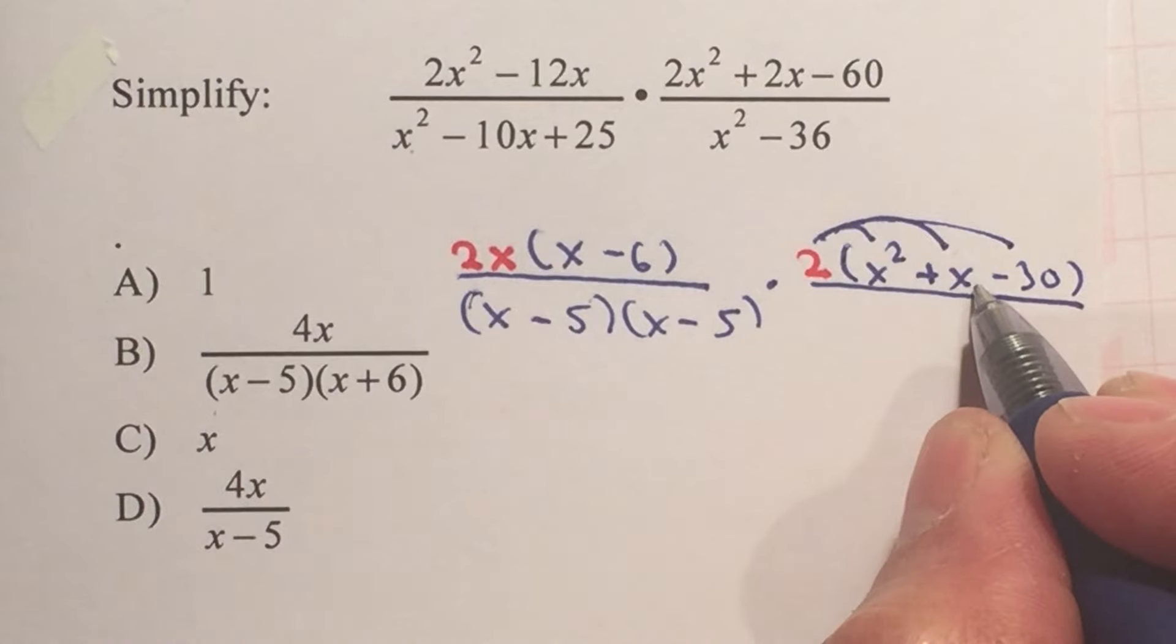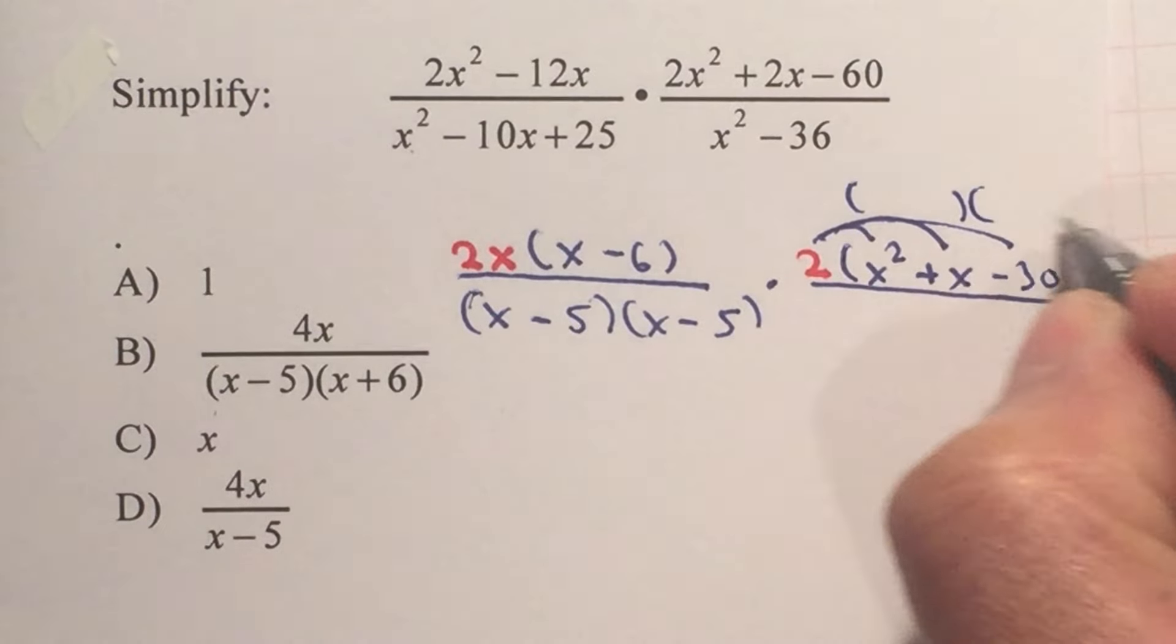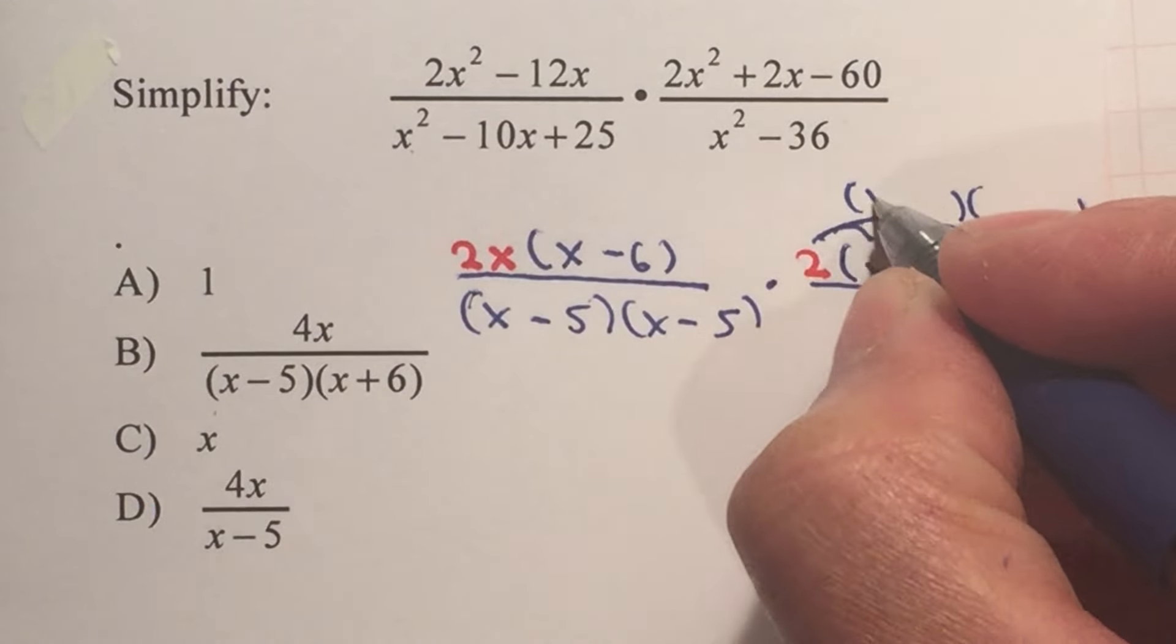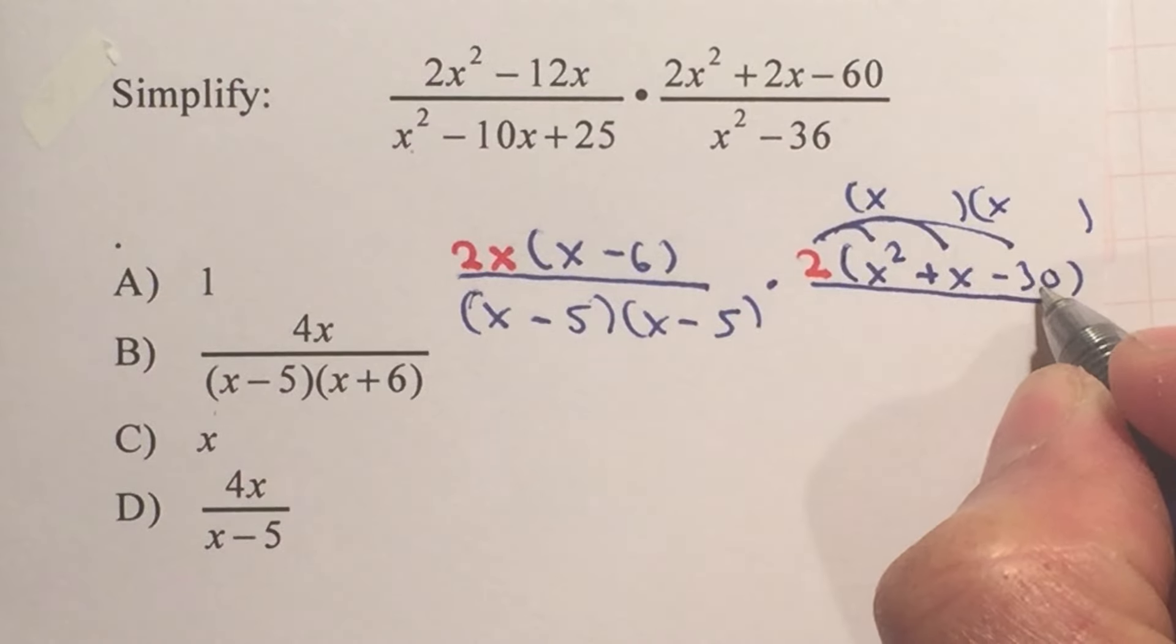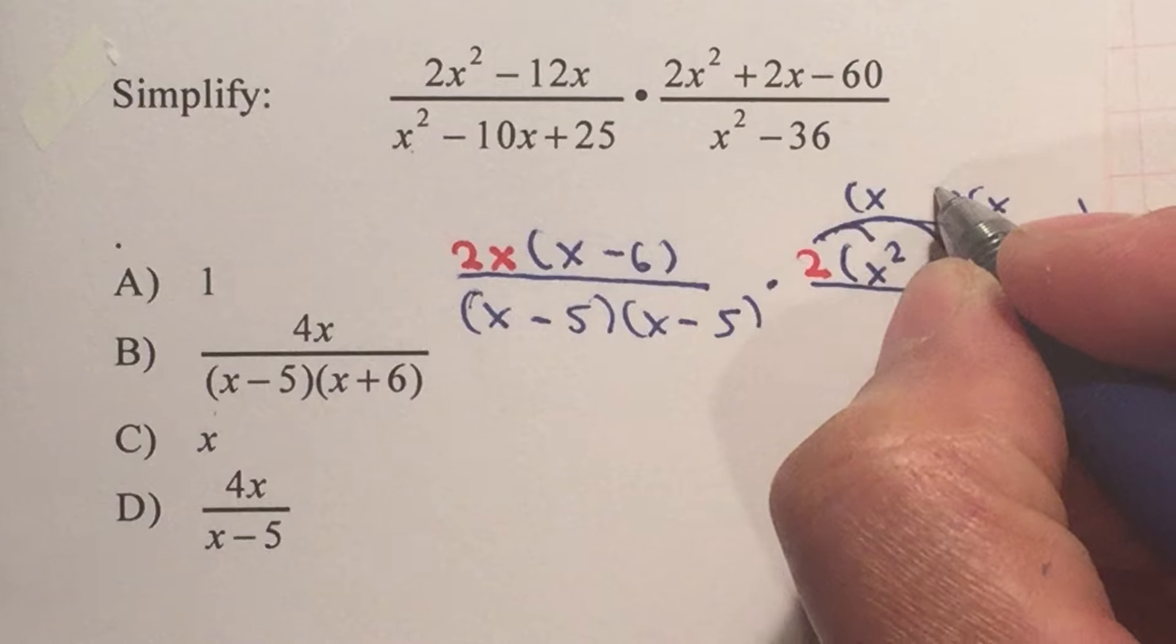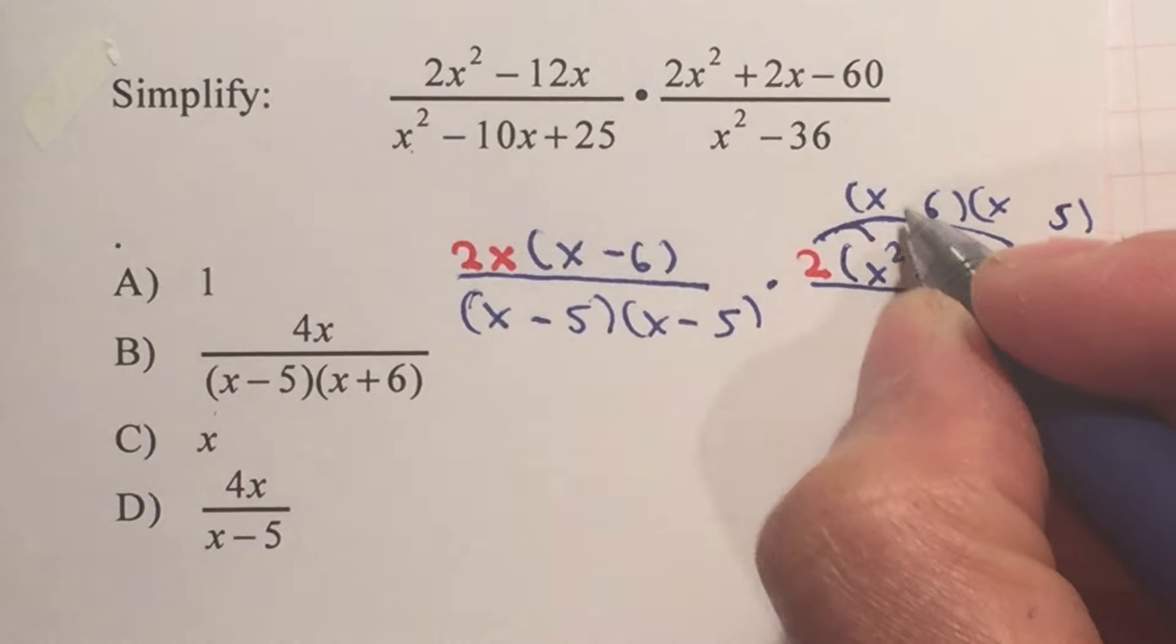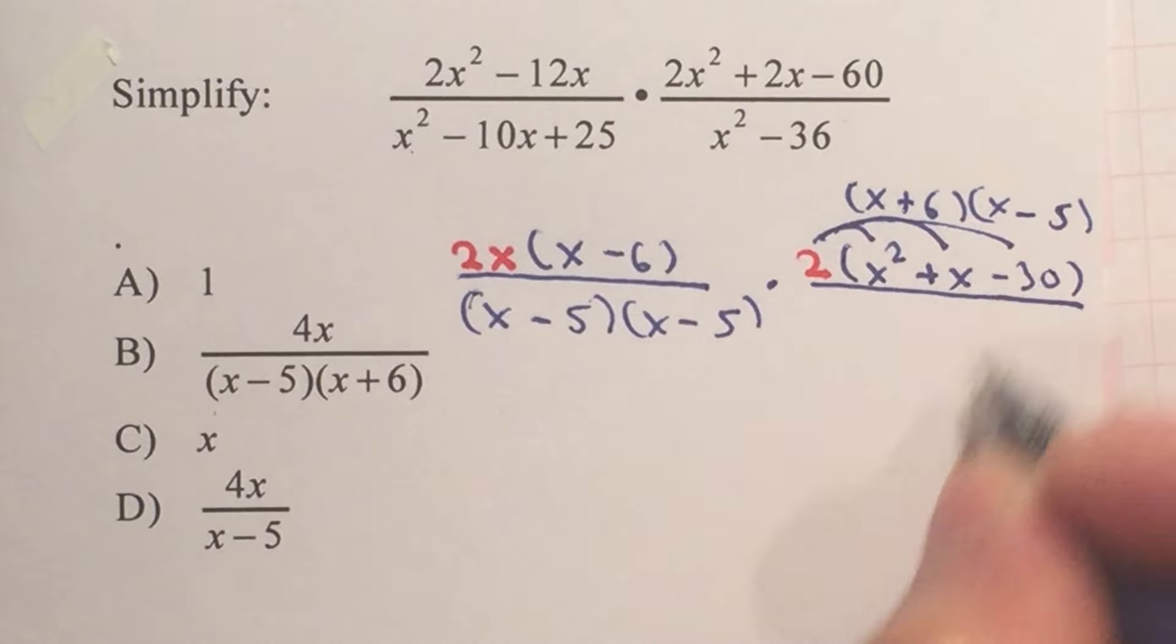I can still factor this out. Since there are three terms, we can use double parentheses to factor this out. Factors of x squared will give me x and x. Factors of 30, I can use 30 and 1, 15 and 2, or 6 and 5. Since they need to add up to 1x, I'm going to use 6 and 5. This is a negative, so one negative, one positive. That will be positive 6 and negative 5.